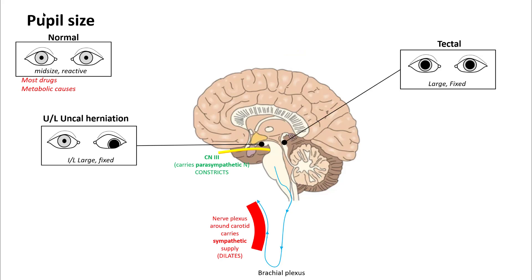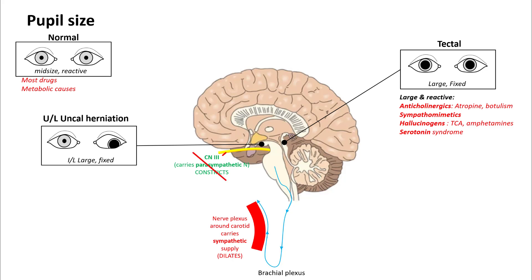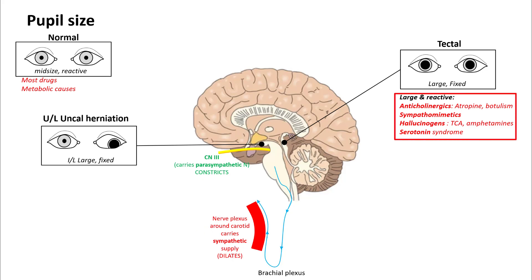So you will get an ipsilateral large fixed pupil looking downwards and outwards. Lesions of the tectal area will result in large and fixed pupils, and lesions of the diencephalon will result in small and fixed pupils. Large and reactive pupils can be seen with lack of parasympathetic supply or excessive sympathetic supply. Patients with anticholinergics, sympathomimetics, hallucinogens, and serotonin syndrome will have large and reactive pupils.